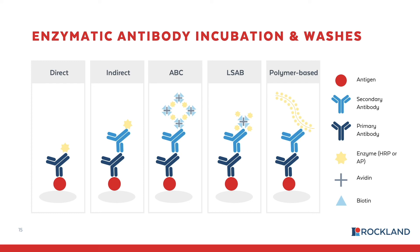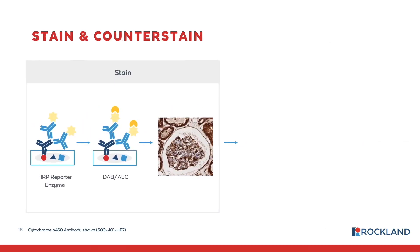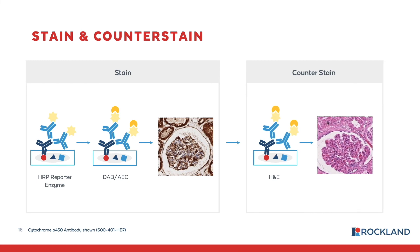The final amplification method is a biotin-free method: the polymer method. This utilizes a long polymer with multiple HRP molecules conjugated to the backbone, and this enzyme-conjugated polymer is conjugated directly to the secondary antibody. This is a nice method because it allows for fewer steps and more enzymes are present, leading to increased signal.